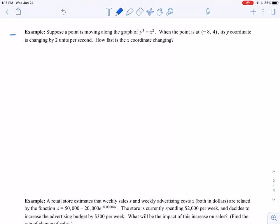So the first example we'll look at, suppose that we have a point that's moving along the graph of y cubed equals x squared. When the point is at negative 8 comma 4, its y coordinate is changing by 2 units per second. How fast is the x coordinate changing? So this one, I think, is a lot more approachable.